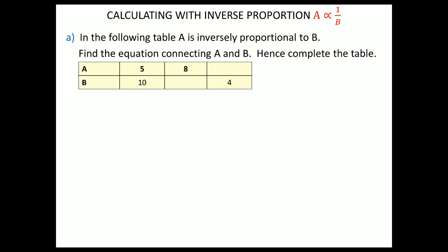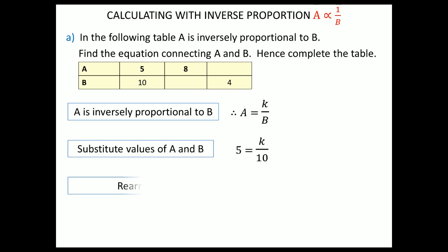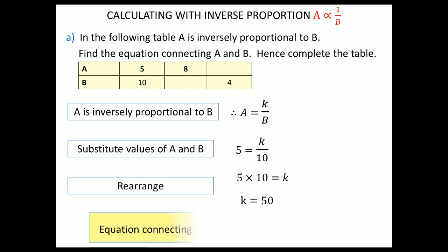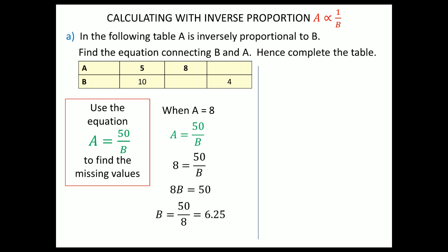Let's look at an example: a is inversely proportional to b — find the equation connecting a and b and complete the table. Since a = k/b, substituting a = 5 and b = 10: 5 = k/10, so k = 50. The general equation is a = 50/b. To complete the table: if a = 8, then 8 = 50/b, so b = 50/8 = 6.25. If b = 4, then a = 50/4 = 12.5.